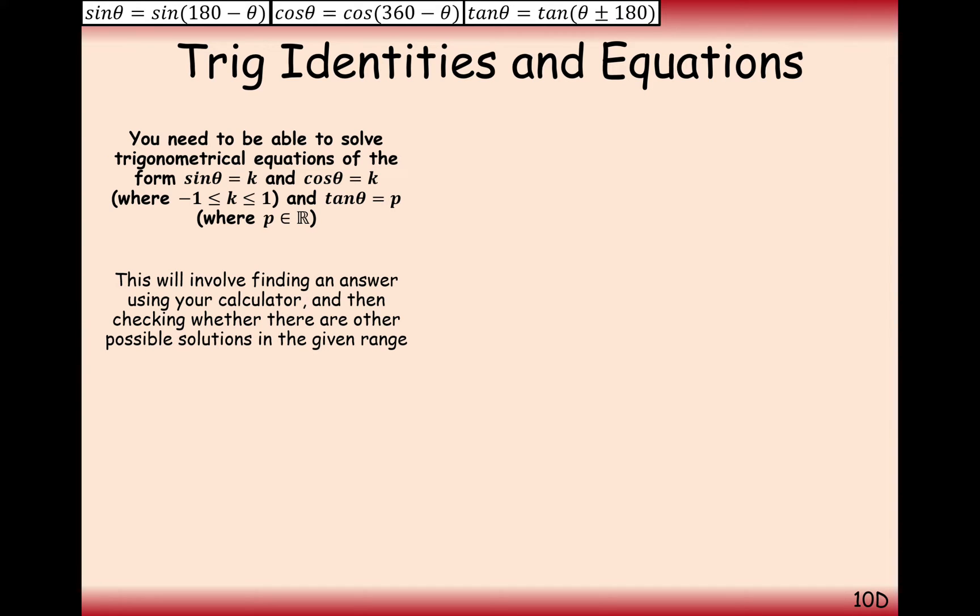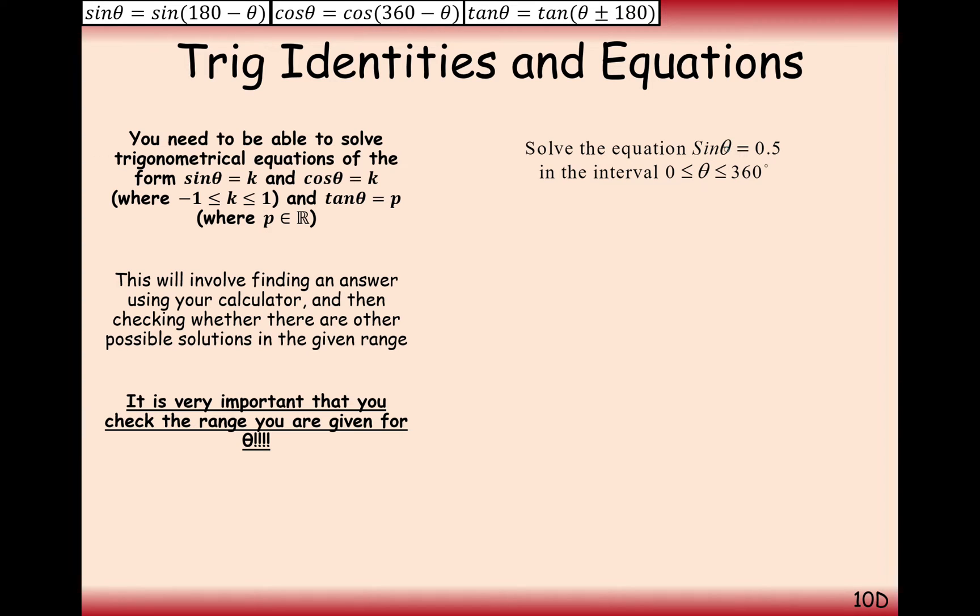Now the key thing with trigonometric equations is that generally you get more than one answer and you generate multiple answers through using the graphs. So here we're going to have an equation of sine theta equals 0.5 in the interval from 0 to 360. So we want to find all of the values of theta that when we sine theta gives us 0.5 as the answer.